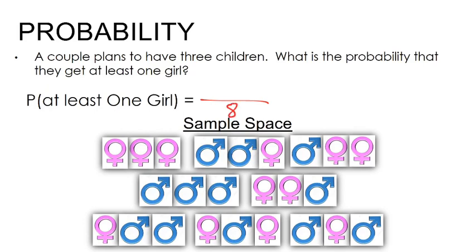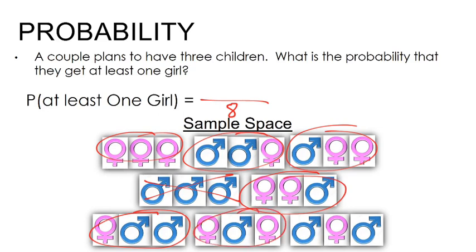Let's look at our number of successes for at least one girl. Going through the eight outcomes, most of them include at least one girl. It looks like there's only one outcome — boy-boy-boy — that would not be a success. So we have seven successes out of eight total outcomes, giving a probability of seven eighths.